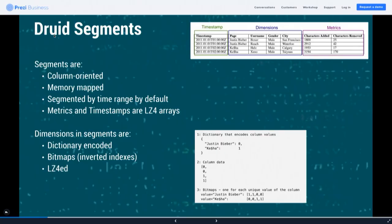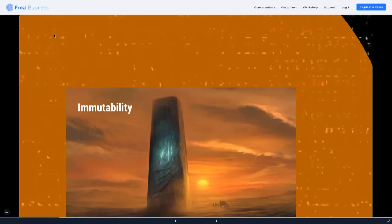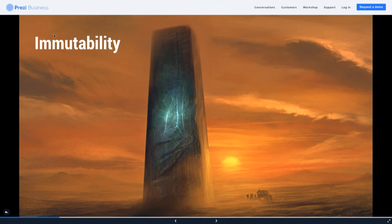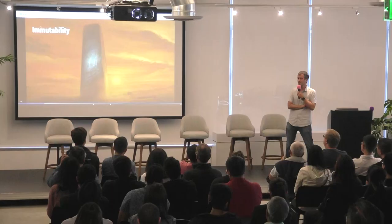I was going to talk about Druid segments but Gian already covered that. If you're going to do data modeling for a database, it's important to understand how data is stored and how the execution engine works. Druid segments are fairly compressed and indexed. One important thing to know is that they are immutable.